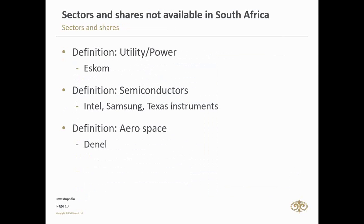Semiconductors are very small and complex devices found in thousands of products such as computers, cell phones, appliances, and medical equipment. South Africa has no companies in this sector — no equivalents to Samsung, Texas Instruments, or Intel. The last example is Denel, South Africa's defence company, which is also not listed. In the US, the aerospace sector includes Boeing, Textron — makers of Cessna, Beechcraft jets, and Bell helicopters — and Rockwell.